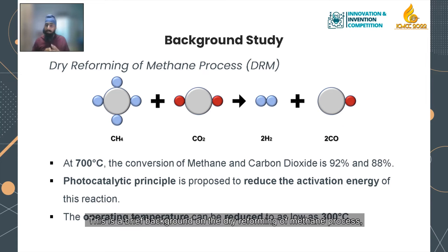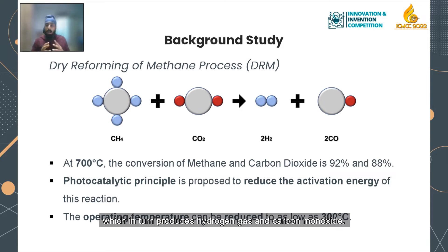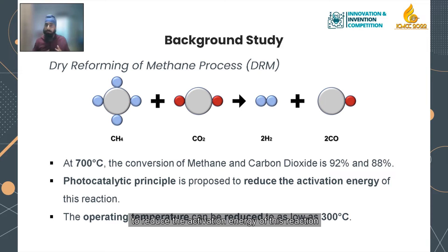Background of the dry reforming of methane process, also known as the DRM reaction. In DRM, the main feedstocks are methane (CH4) as well as CO2 (carbon dioxide), which in turn produces hydrogen gas as well as carbon monoxide. At 700 degrees Celsius, the conversion of methane and carbon dioxide is 92% and 88% respectively. Therefore, the photocatalytic principle is proposed to reduce the activation energy of this reaction, as well as the operating temperature, which can be reduced to as low as 300 degrees Celsius.